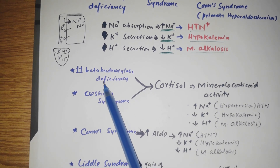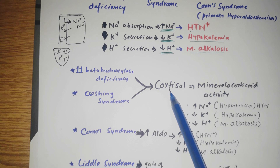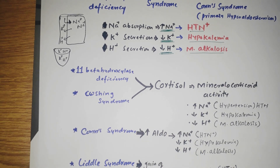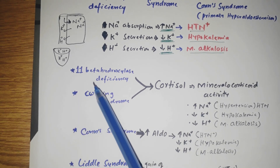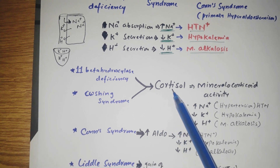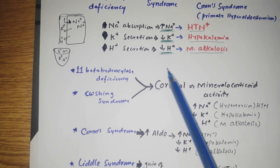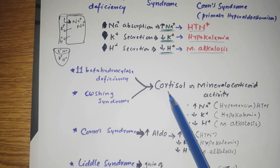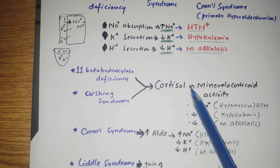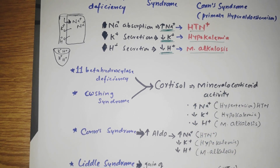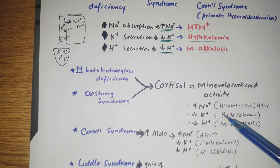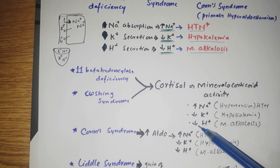11-beta hydroxylase is the enzyme that converts cortisol into cortisone. If there is a deficiency of this enzyme, cortisol levels rise. In Cushing syndrome, cortisol is also elevated. Cortisol has mineralocorticoid activity, meaning increased sodium retention, hypertension, decreased potassium causing hypokalemia, and decreased protons causing metabolic alkalosis.